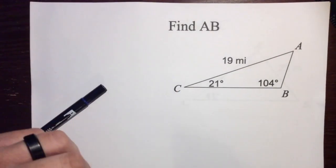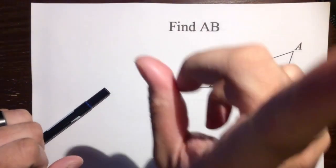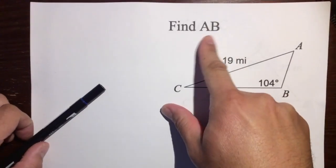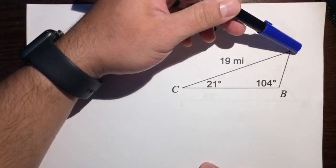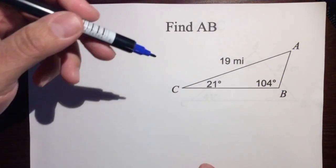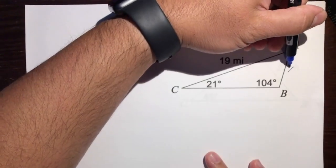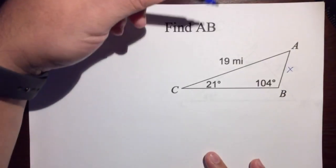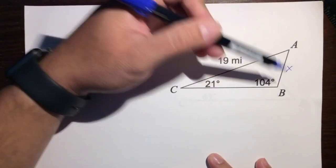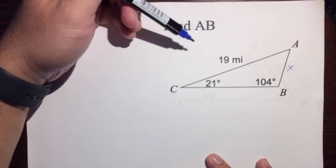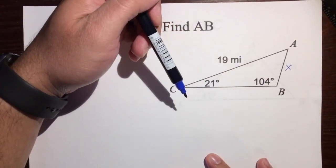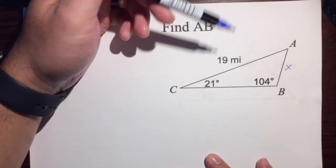Hello, this is Mr. Kenyanola. I'm going to show you how to find AB. AB is this side right here, and I'm actually going to call it X — I don't want us to think we're trying to find angle A and angle B. We want to find this side right here. So, find AB: what is the length of this side?